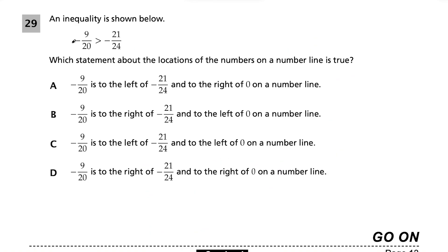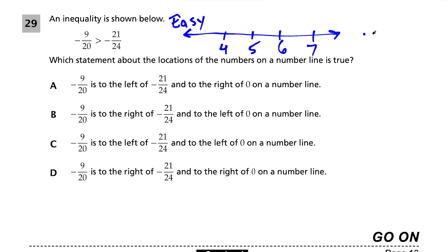Question 29: we're told −9/20 > −21/24, and want to know the locations of these numbers on a number line. Think of a simple example: 7 > 4, and 7 is to the right of 4. So whenever a number is greater than another, it's to the right. Since −9/20 is greater, it's to the right of −21/24 — eliminating choices A and C.